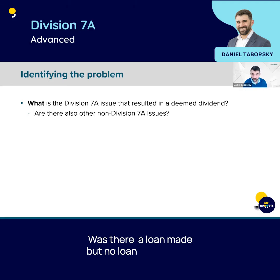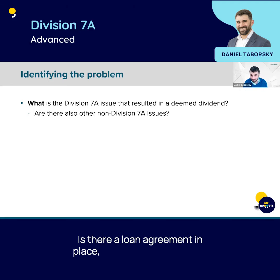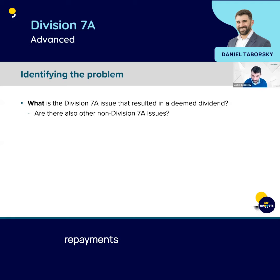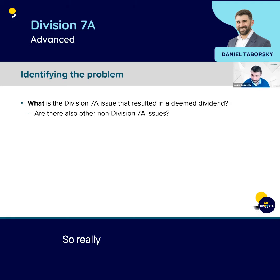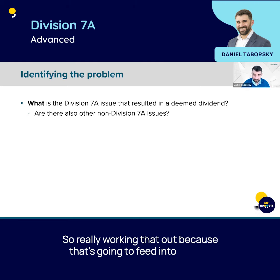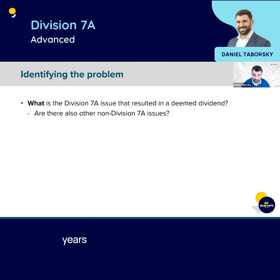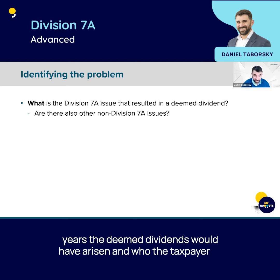Was there a loan made but no loan agreement? Is there a loan agreement in place but there are no minimum repayments being made? Is it a forgiveness or is it a payment? Working that out is important because it will feed into which years the deemed dividends would have arisen and who the taxpayer is.